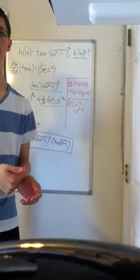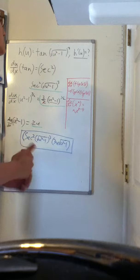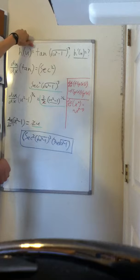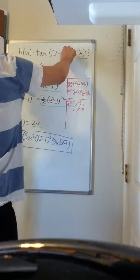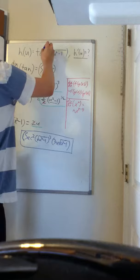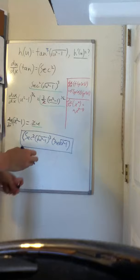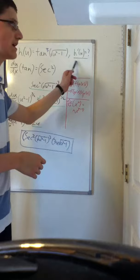For this video we have the problem where we are given the function h of u is equal to tangent cube of the square root of u squared minus one. And we are prompted to find h prime of u, which is simply asking for the derivative of the function h of u.